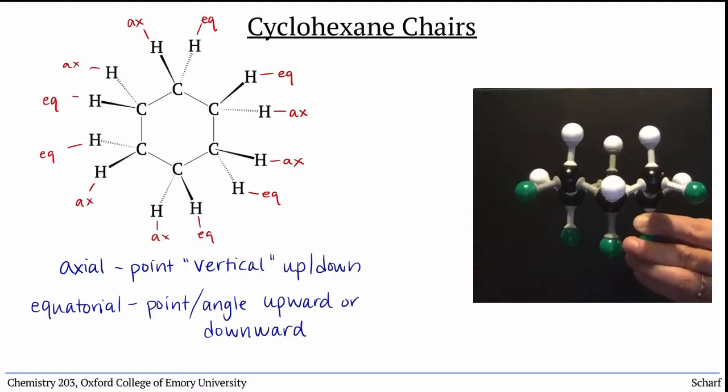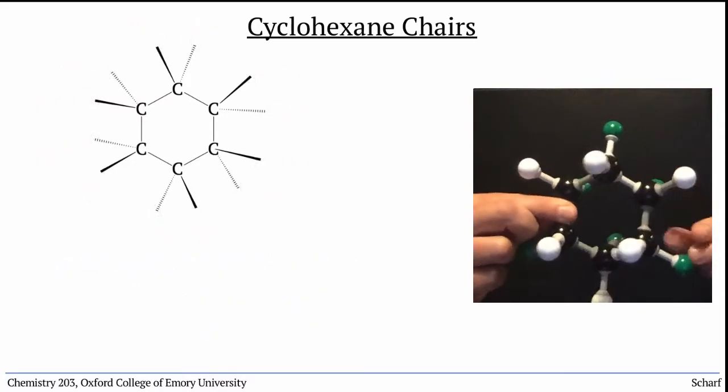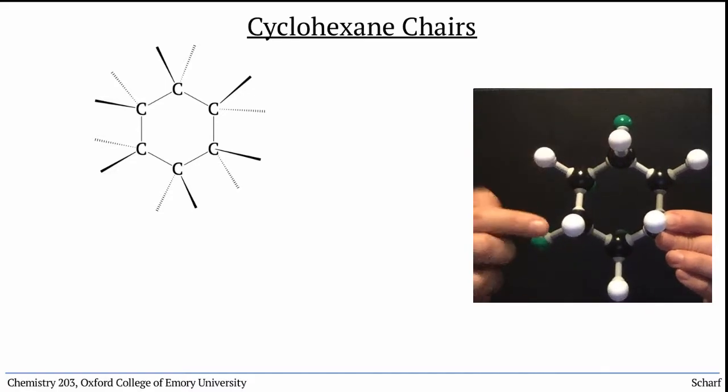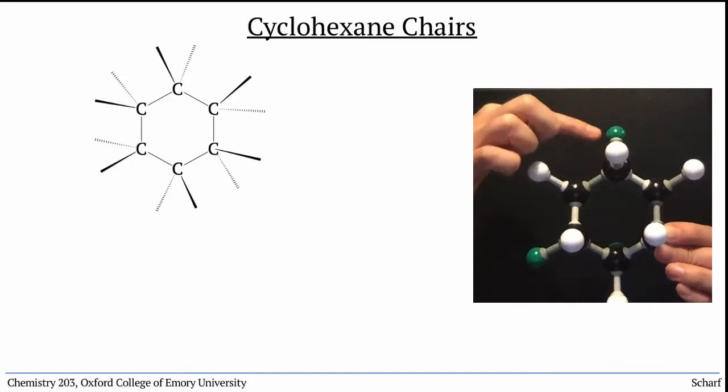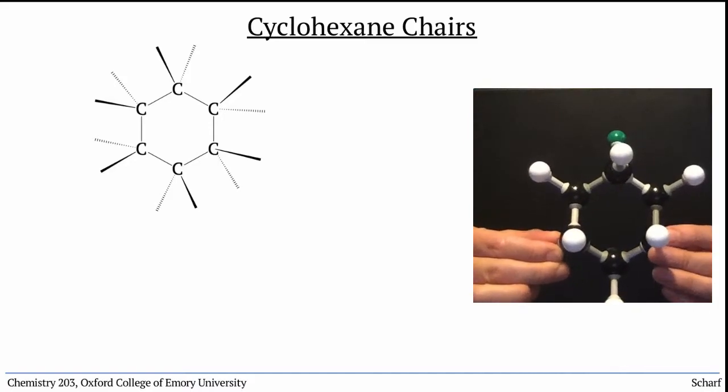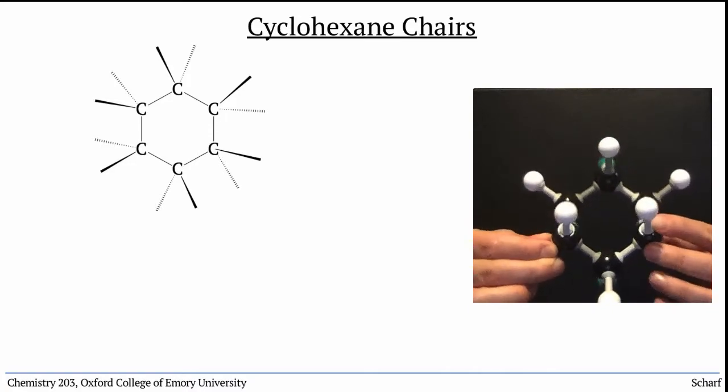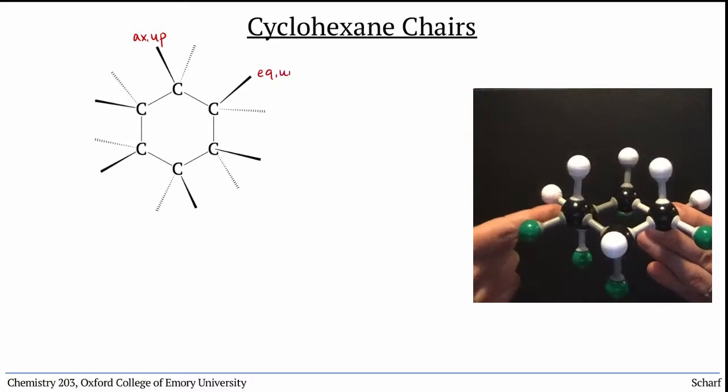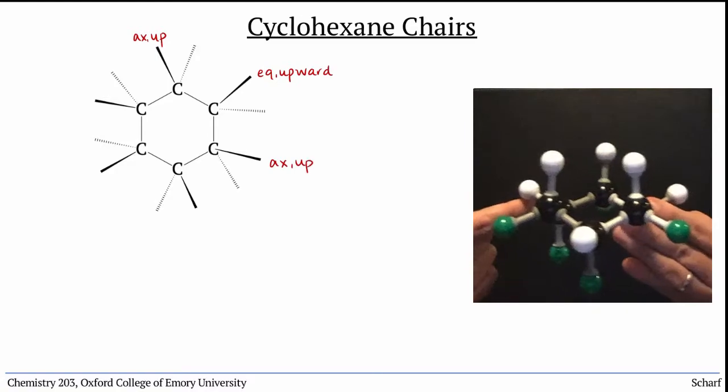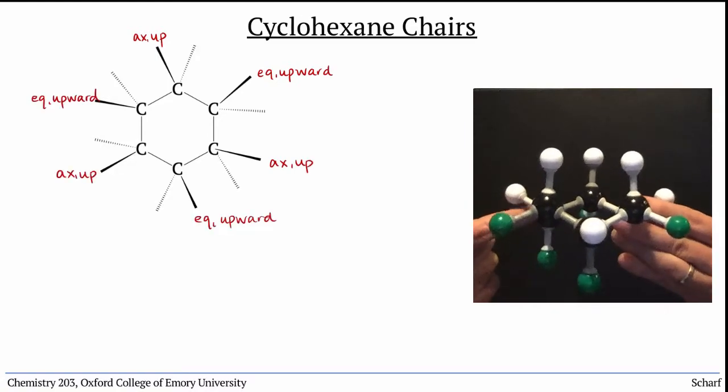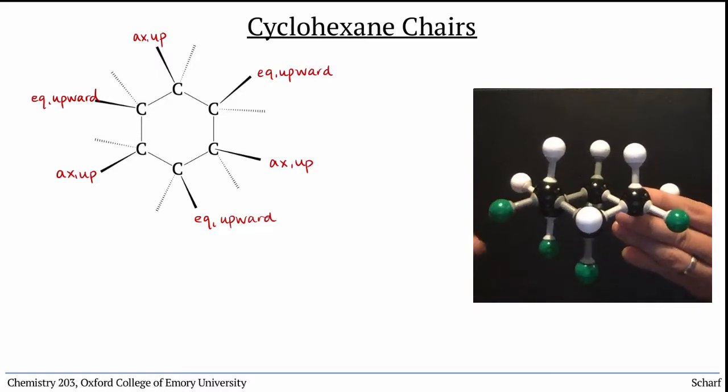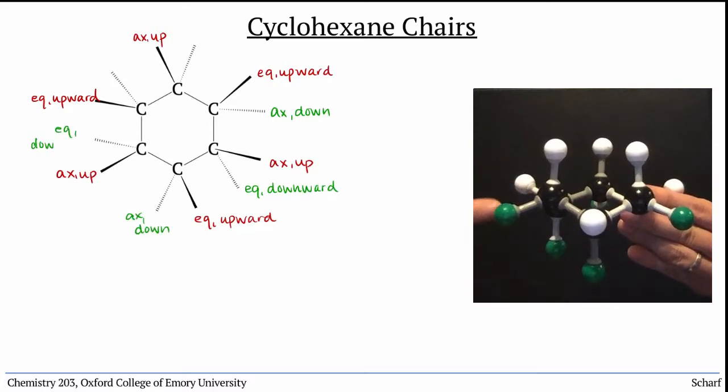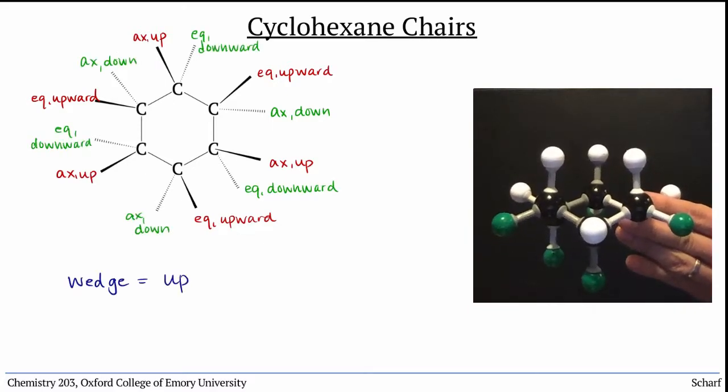In our typical drawing of a cyclohexane as a hexagon on paper, each carbon has a substituent drawn on a wedged bond and a substituent drawn on a dashed bond. By convention, substituents on wedges are either axial up or equatorial angling upward, and dashes are equatorial pointed downward. Think wedge up, dash down.